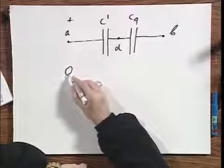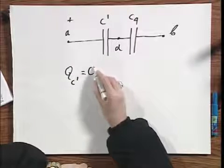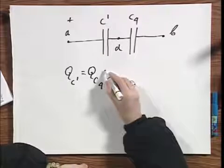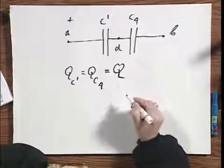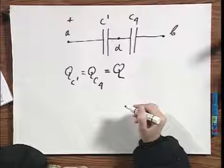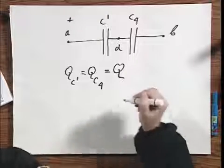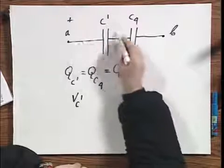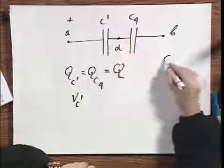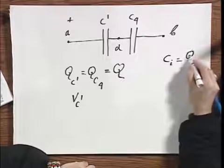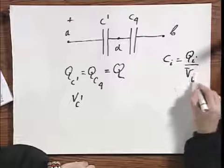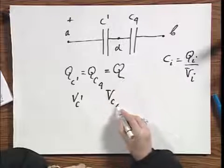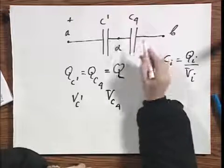And if you go back to my introduction, then the Q on C prime must be the Q on C4, two capacitors in series, and therefore I will call this Q. And so it's very easy to calculate for you now what V C prime is, the potential difference over here, because C of I equals Q of I divided by V of I. And it is also very easy for you to calculate what the potential difference is over number four.